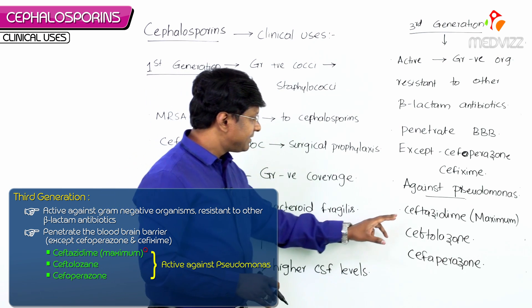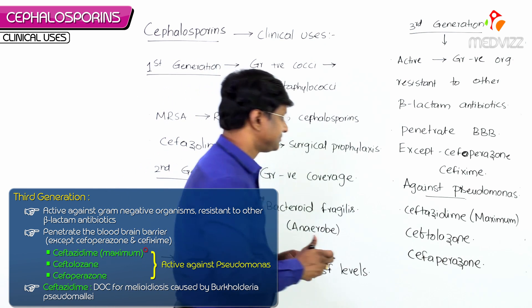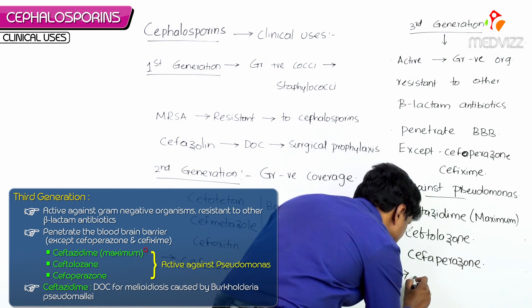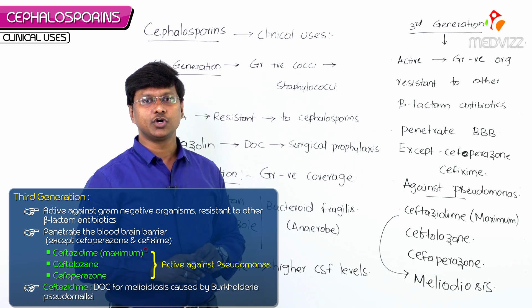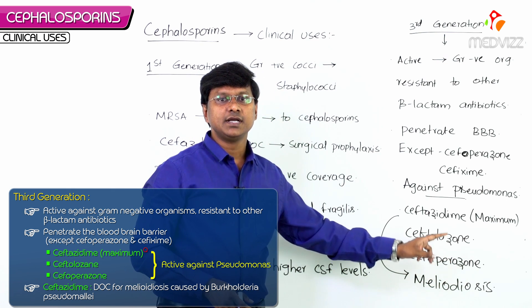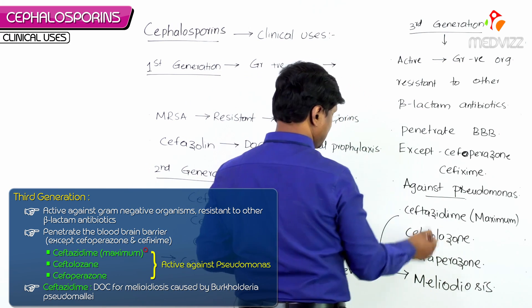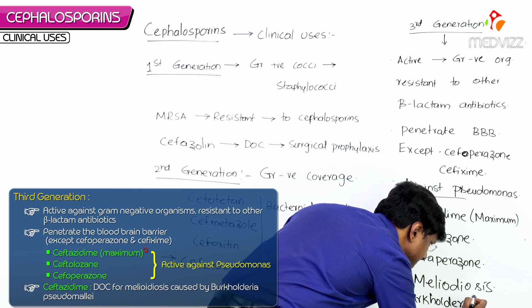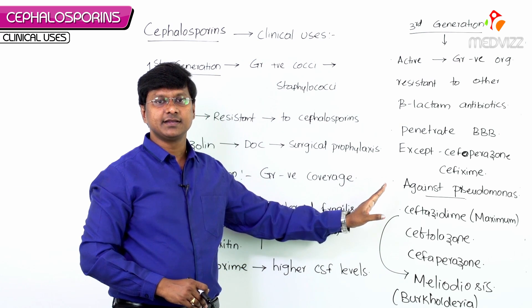Ceftazidime is also the drug of choice for melioidosis, which is caused by the organism Burkholderia pseudomallei.